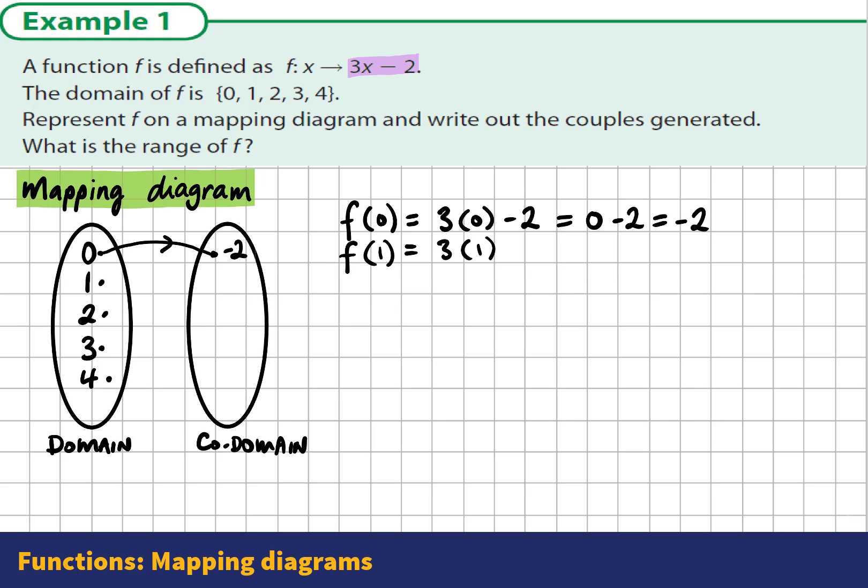When we input 1, we get 3 times 1 minus 2, which is 3 minus 2, which is equal to 1. So we'll show on our mapping diagram that 1 is mapped onto 1.